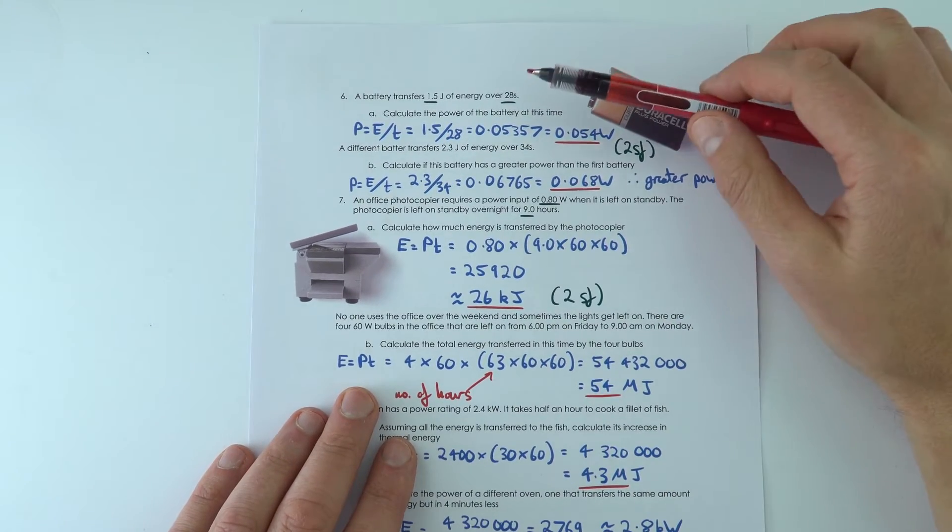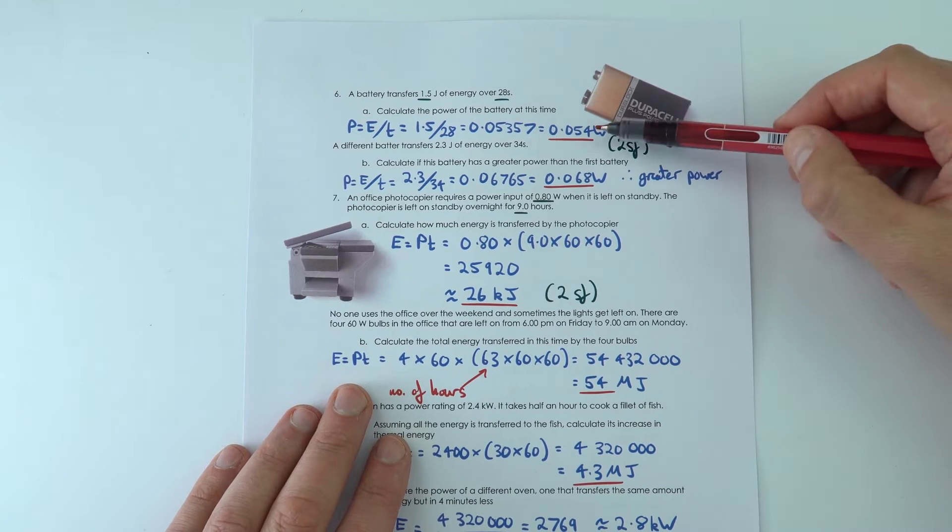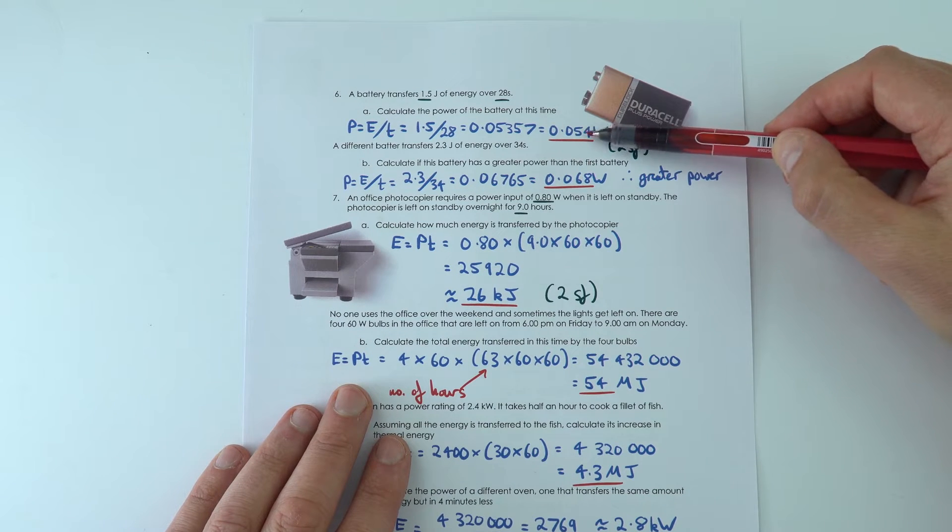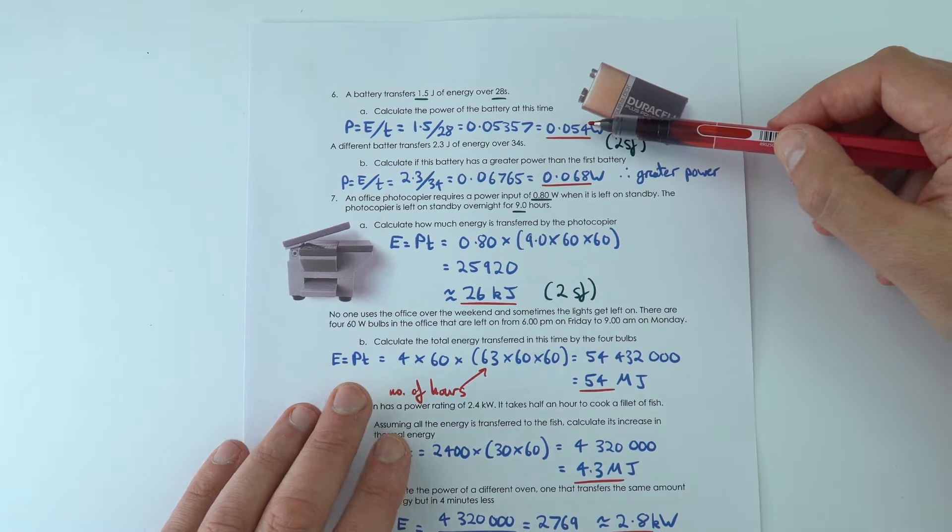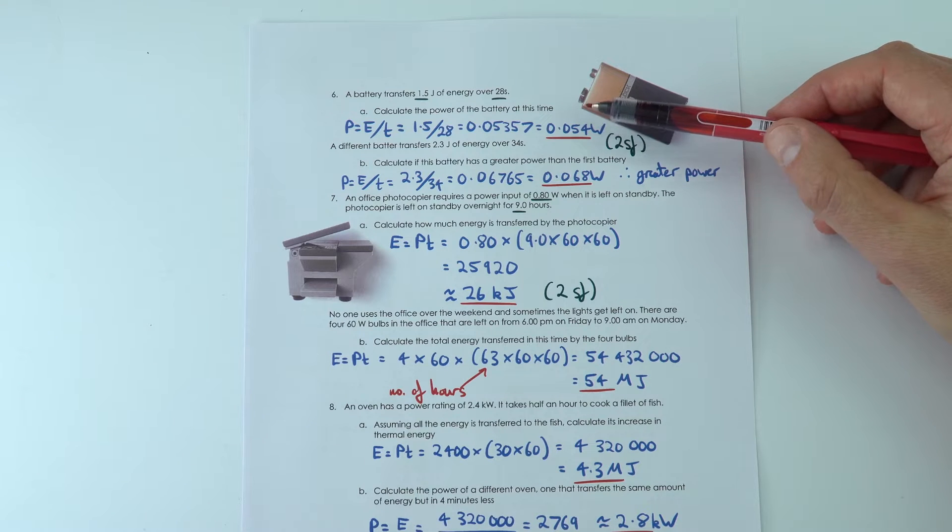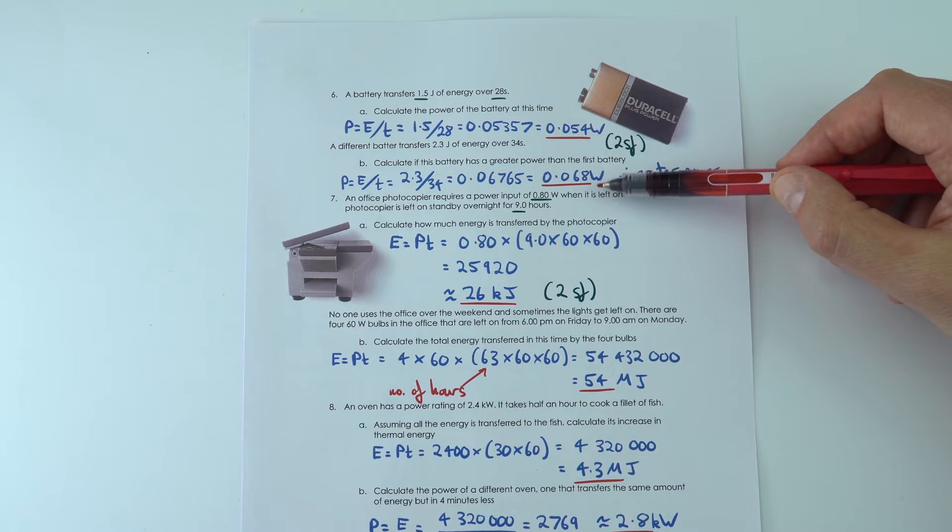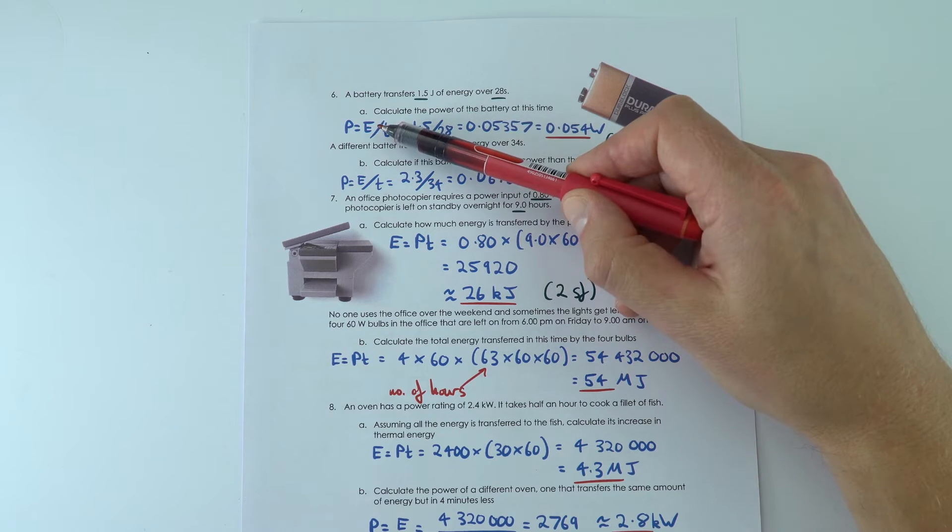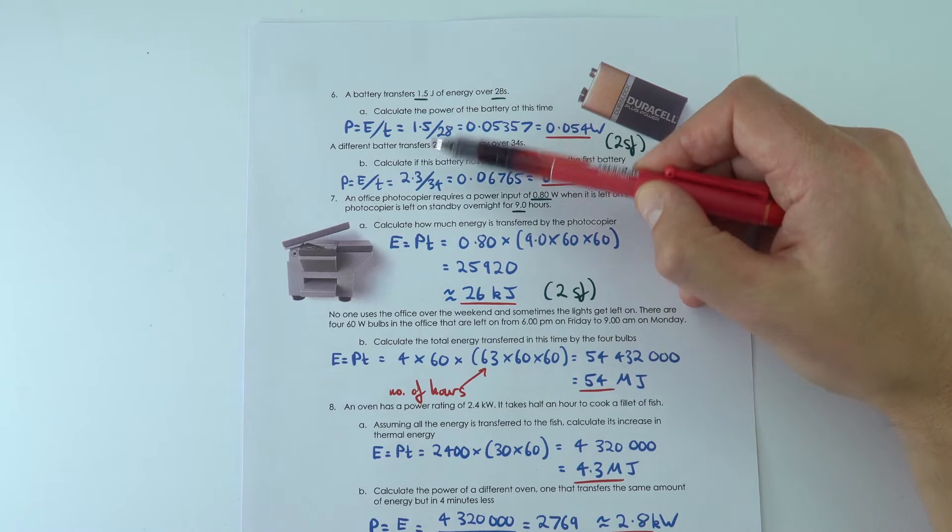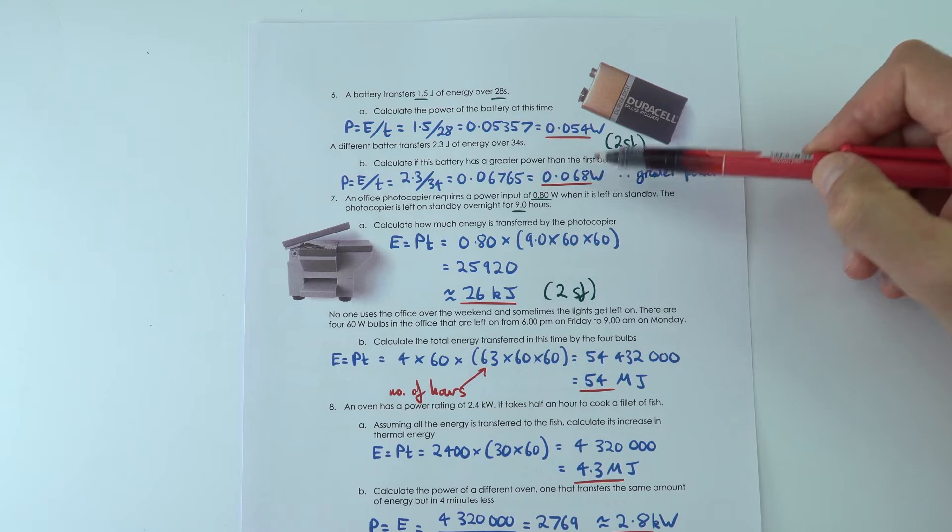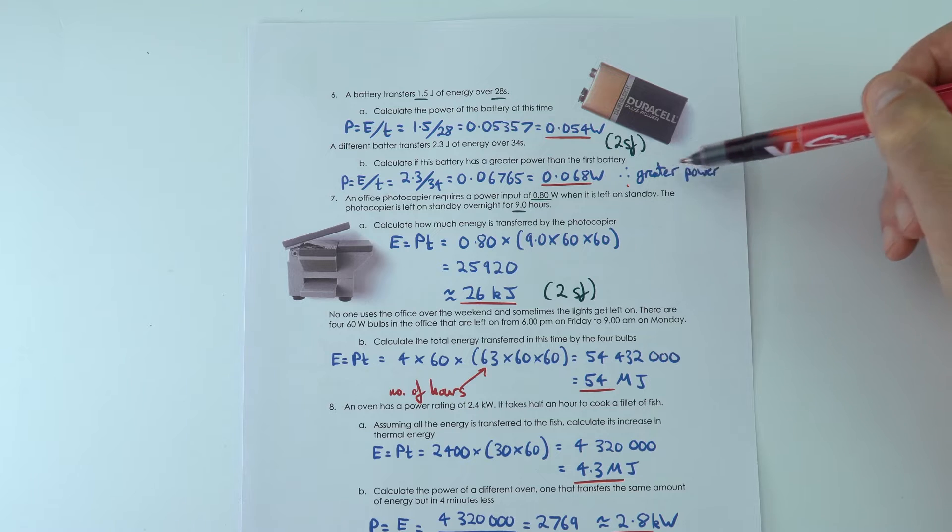The next one, we've got a battery transferring some energy. Initially, this battery transfers energy at a rate of 0.054 watts, whereas now we've got a different one which is 0.068. So again, all I'm doing is selecting the equation, finding the data from the question and putting it in. Not forgetting of course that this therefore means that this has a greater power.